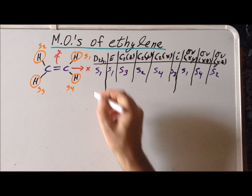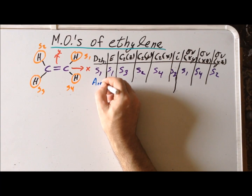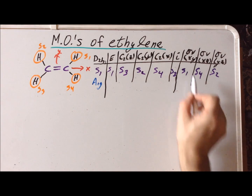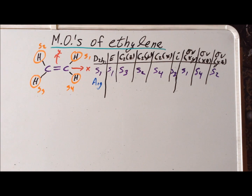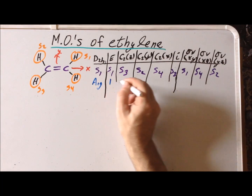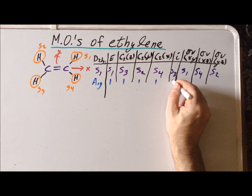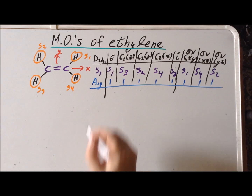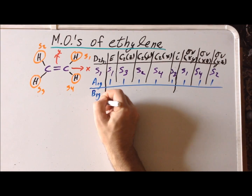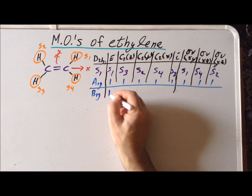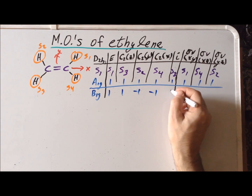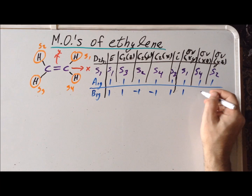Now we fill in our table with the characters from the D2h character table for each irreducible representation that formed part of the gamma sigma. A1g is the totally symmetric representation, so all characters are positive one. For B1g, the characters are +1, +1, −1, −1, +1, +1, −1, −1.